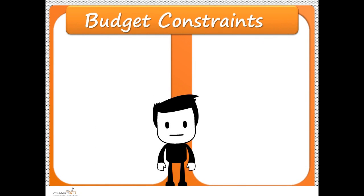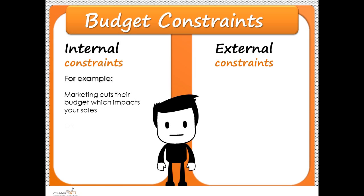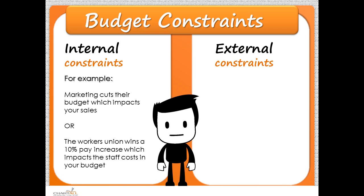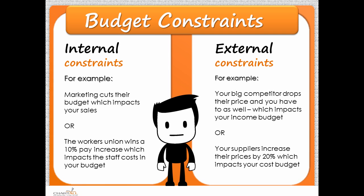Budget constraints are things that squeeze your budget and they can come from within or outside. What constraints affect your budget? Some of these scenarios sound all too familiar in the South African context. We have strike season, or due to e-tolls, your suppliers are forced to increase their prices because of the ripple effect by 20%. Those would be some of your external constraints.